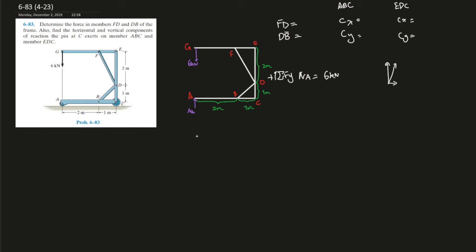Let's draw the member GE right over here. At E, there's a force going this way — 6 kilonewtons — and the member force over here is going in some direction we don't know, and the force at E is also going in some direction we don't know.